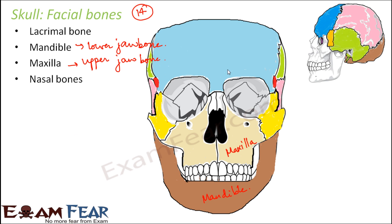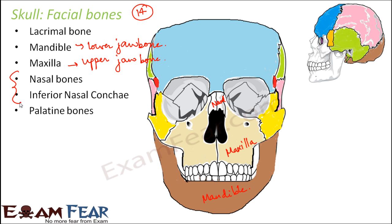The nasal bones are present in the nose area — you can see them here. The inferior nasal concha are bones that form the sides of the nasal cavity, so the nose itself has many bones involved. Palatine bones form the back of the mouth — the roof of the mouth on the inside also contains bones. The zygomatic bones are the cheek bones.